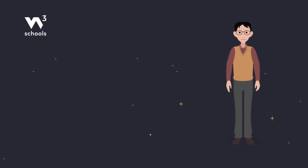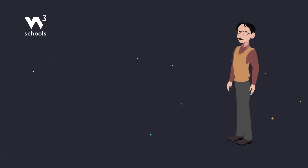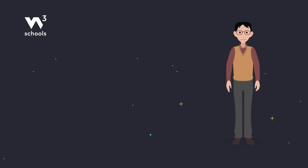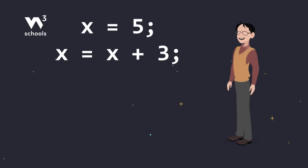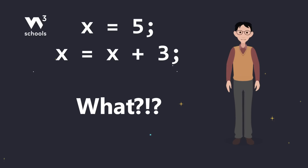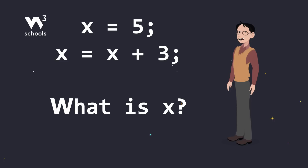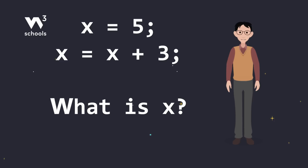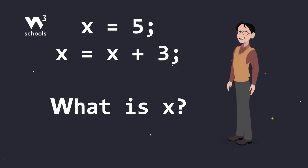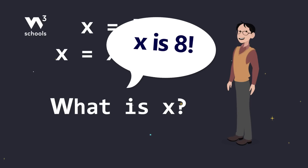Here's a cool thing: in JavaScript, the equals sign doesn't mean equal to like in math — it's an assignment operator. It stores the value on the right into the variable on the left. Look at this example: it wouldn't make any sense in normal math — x equals itself plus three. But in JavaScript, it makes perfect sense. Using the assignment operator, this assigns the value of x plus three to x. It recalculates x to eight by adding three to the existing value.